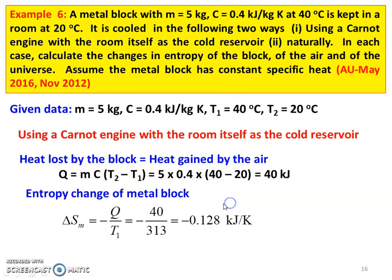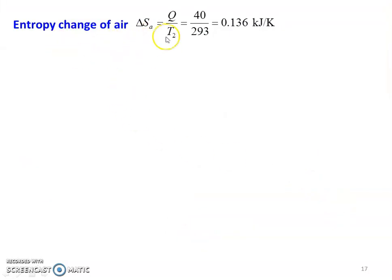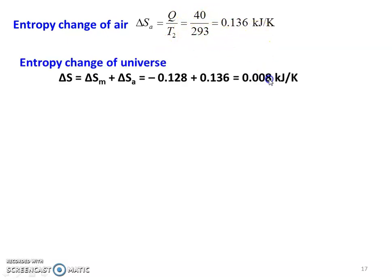Change in entropy of the metal block: delta S_M = −Q/T1 = −40/313 = −0.128 kJ per Kelvin. The metal block is losing heat energy, so entropy change is negative. Change in entropy of the air: air is absorbing the heat energy, so entropy change is positive. Delta S_air = Q/T2 = 40/293 = 0.136 kJ per Kelvin. Total entropy change of the universe = (−0.128) + 0.136 = 0.008 kJ per Kelvin.